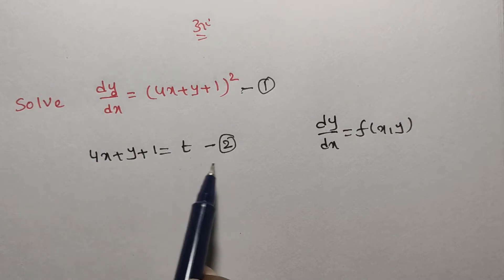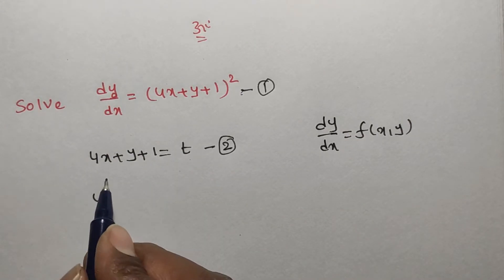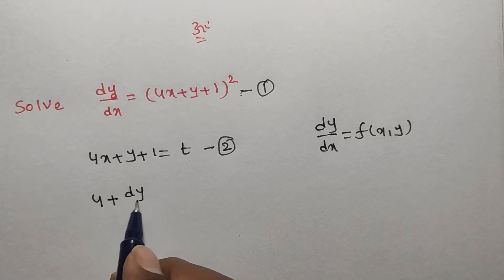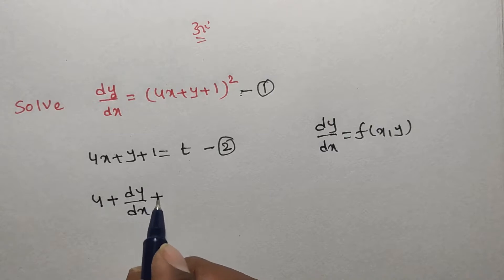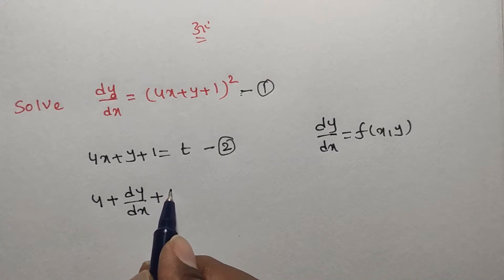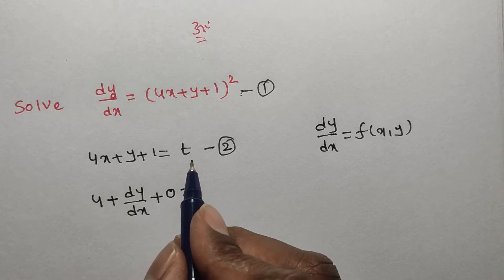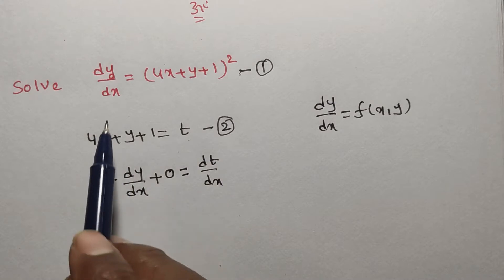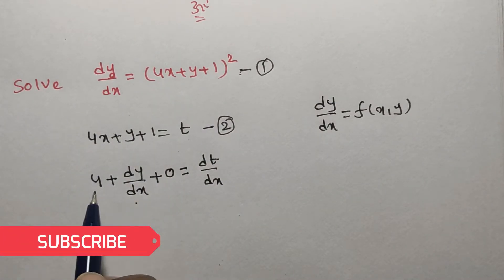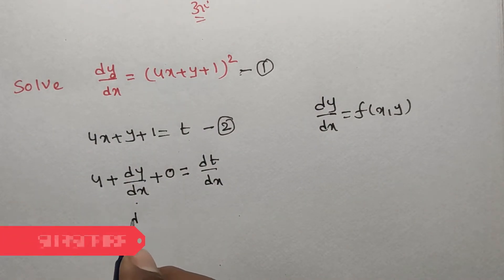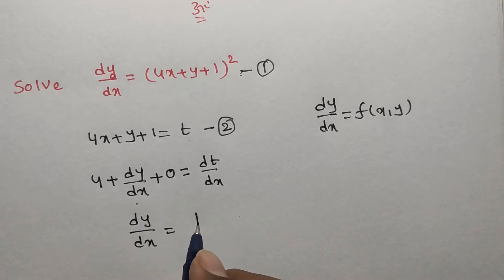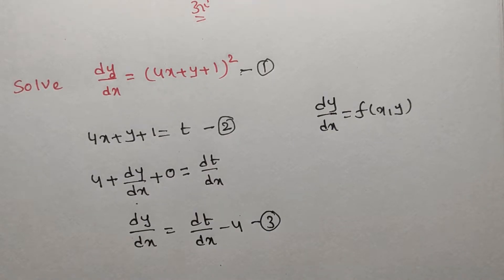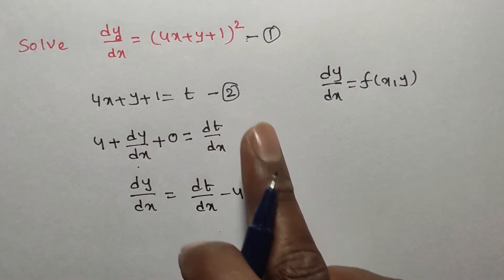Differentiating t = 4x + y + 1 with respect to x: the derivative of 4x is 4, the derivative of y is dy/dx, and the derivative of the constant 1 is 0. So dt/dx = 4 + dy/dx. Rearranging, dy/dx = dt/dx − 4. Consider this as equation number 3.